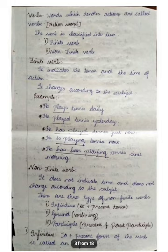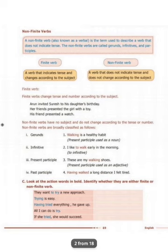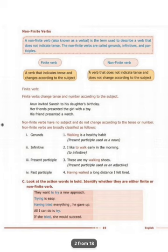Now let's move to non-finite verbs. There are three types: gerund, infinitive, and participle. In participle there are two types: present participle and past participle. Non-finite verbs have no subject and do not change according to tense or number — that is the key difference between finite and non-finite verbs.